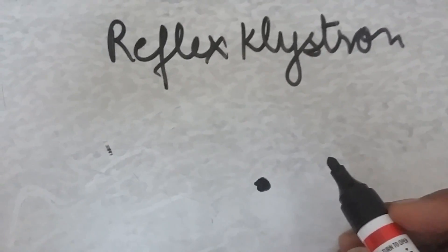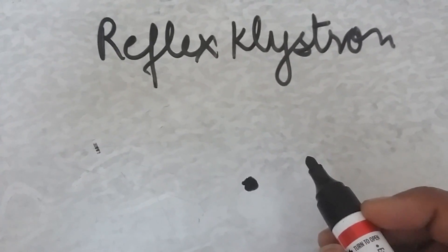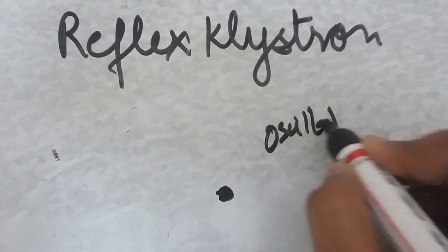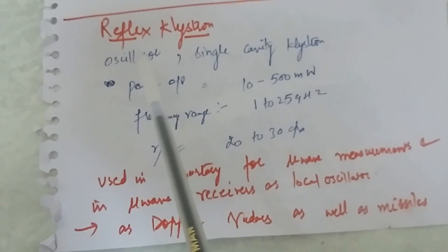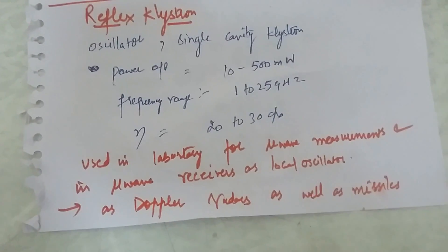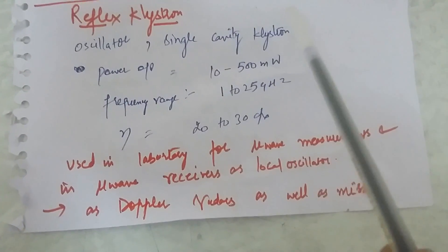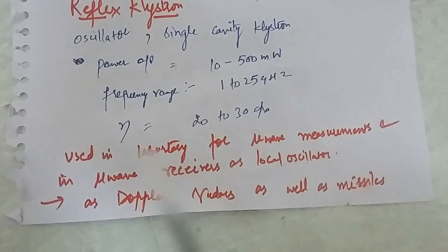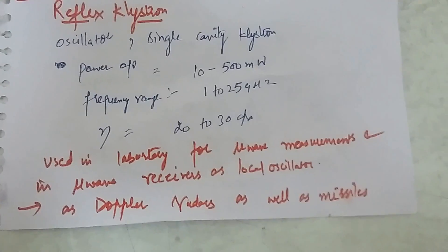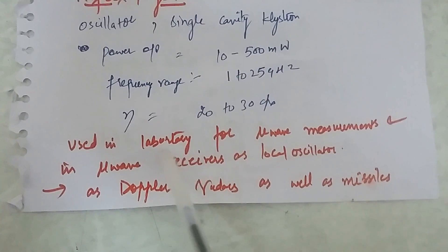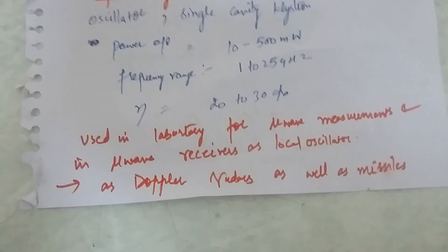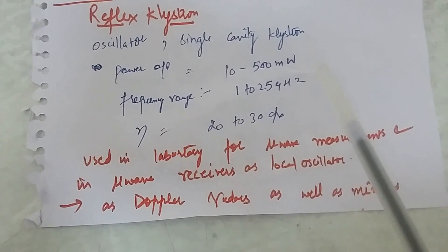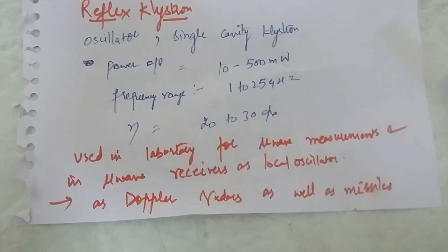The next video is on the reflex klystron. The reflex klystron is an oscillator — it produces oscillations at microwave frequencies, so it's a microwave oscillator. It is a single cavity klystron, unlike the two-cavity klystron which had two cavities. The power output is 10 to 500 milliwatts and the efficiency is very low. It is used for low power purposes like in laboratories, for microwave measurements, in microwave receivers as a local oscillator, and it can also be used in Doppler systems or in missiles.